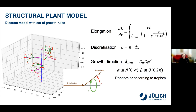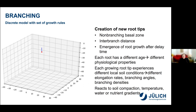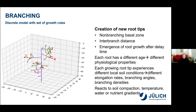After a new root segment has been created, a new growth direction is chosen by multiplication with two rotation matrices that change the axial and radial angle of the growth direction. In general, if nothing else is specified, this change in growth direction can be random, or we can make it directed towards, for example, a water gradient in soil or some other kind of tropism. New growing root tips are created within the branching zone at given inter-branch distances. Each new root segment has a different age and thus different physiological properties. Each growing root tip also experiences different local soil conditions, which might affect elongation rates, branching angles, or branching densities. In this way, the root system can react to environmental conditions like soil compaction, temperature, and water and nutrient gradients.